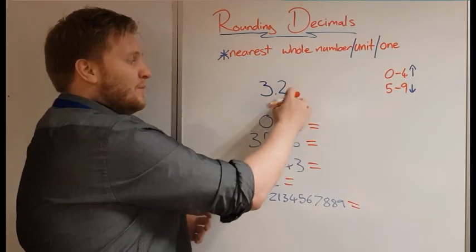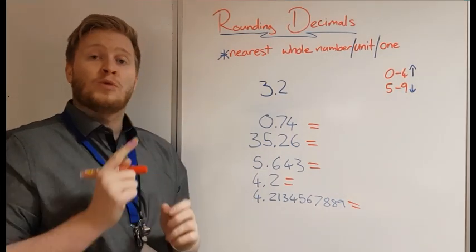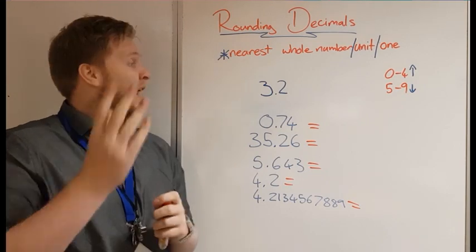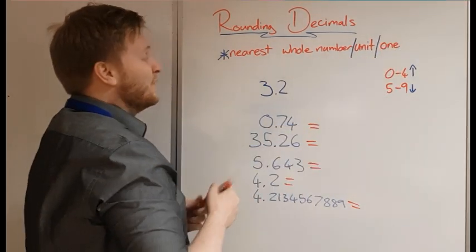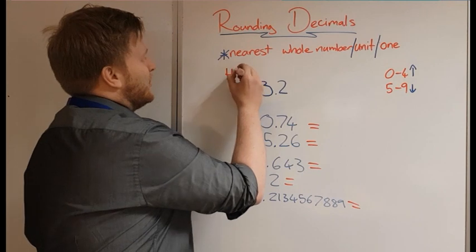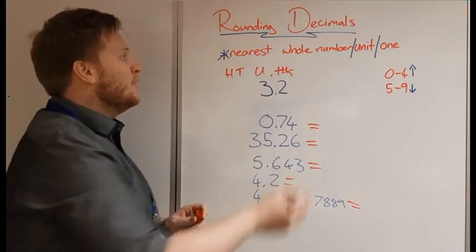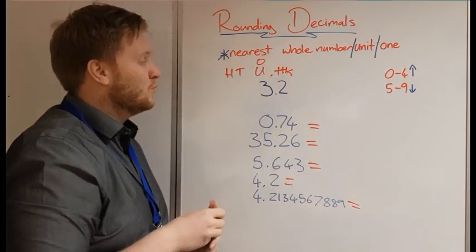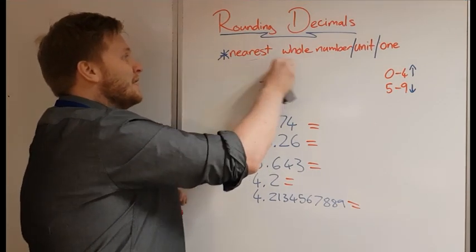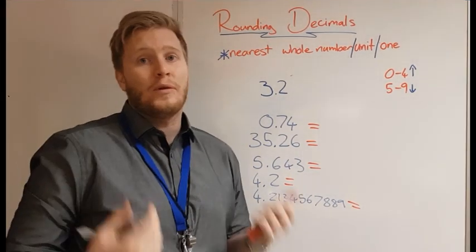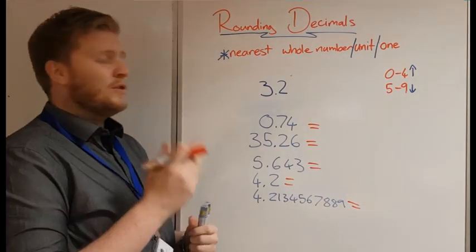Numbers after the decimal point represent part of a whole, part of one. So when we round to a whole number, we're going to get rid of those decimals. If we know our place value — hundreds, tens, units, tenths, and so on — we know what a unit or ones column is. Rounding decimals is pretty much the same as rounding any number, so if you know how to round any number you'll be sorted.